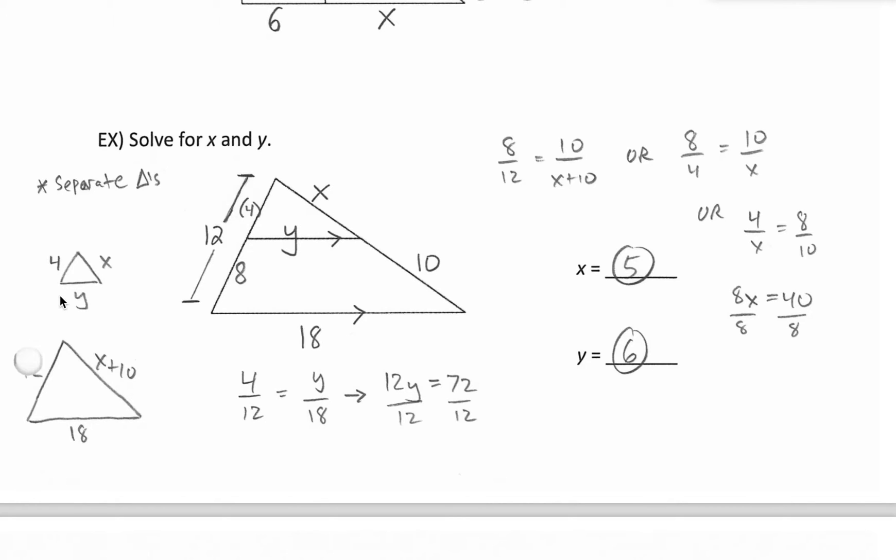So now I can compare left sides to right sides or bottoms, whatever helps us solve for what we need. So if we need x, well, we have 4 compared to 12 here. That's going to be our first ratio using two values that we know. And we can compare that to the right side, x to x plus 10.